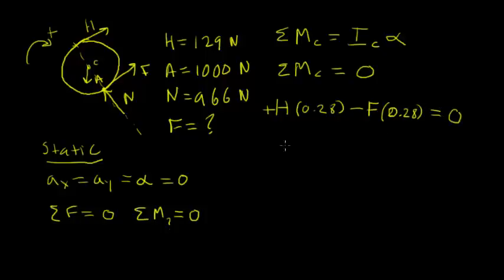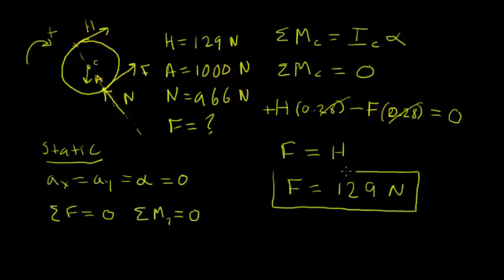Now, it's just a question of solving, because we know what H is. We know that H is 129. When I go to solve, I'll notice that both terms have a factor of 0.28. So, I actually could just divide by 0.28 and get rid of those. And, what I'm going to wind up with is that the friction force is simply equal to the hand-rim force H, or F is equal to 129 newtons. And, that is how we solve example 7.4.